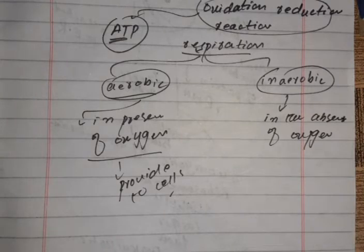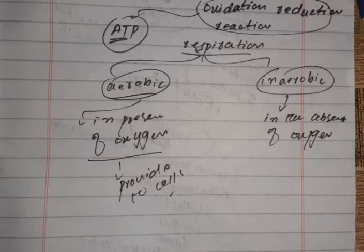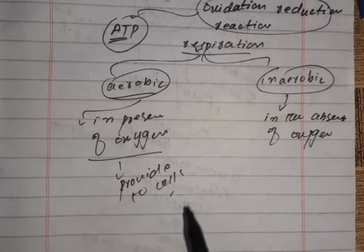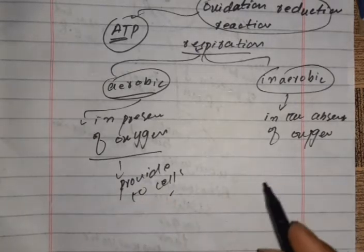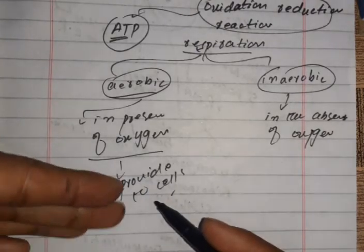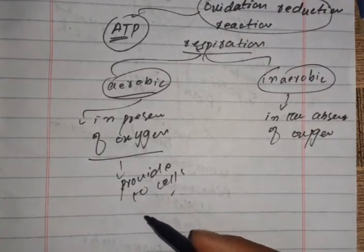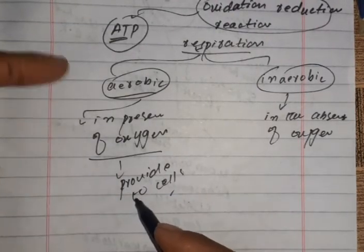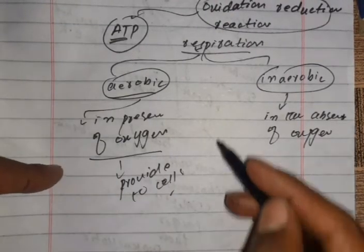The carbon dioxide produced during cellular respiration is taken out of the cells and ultimately from the body. This oxygen is taken into the cells for cellular respiration.